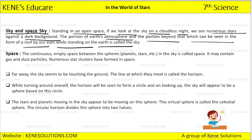Simply, when you look above, that dark background you can see at night with the stars — the portion beyond that is nothing but the sky. What is called space? The continuous empty space between the spheres, planets, and stars in the sky is called space.